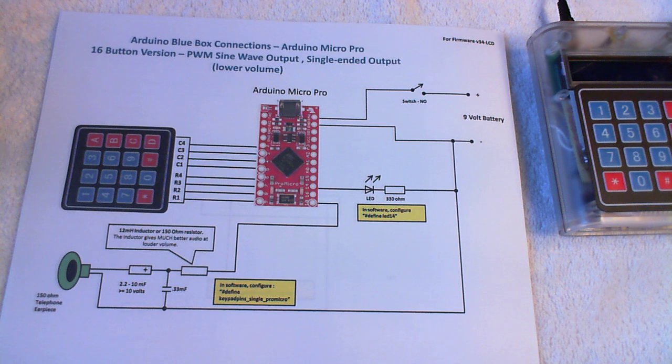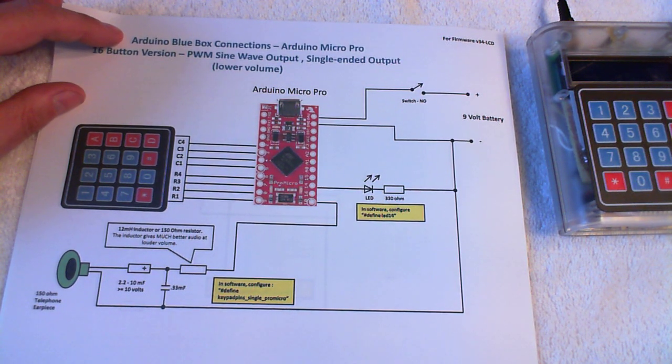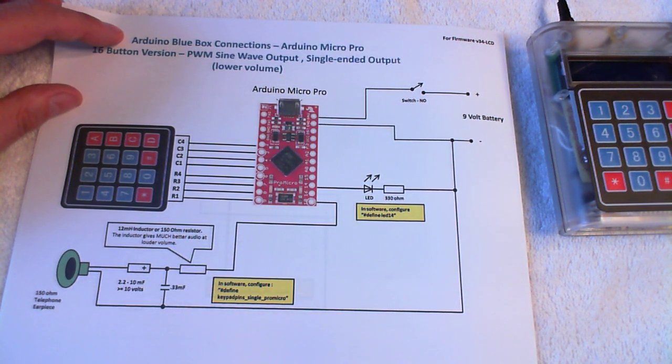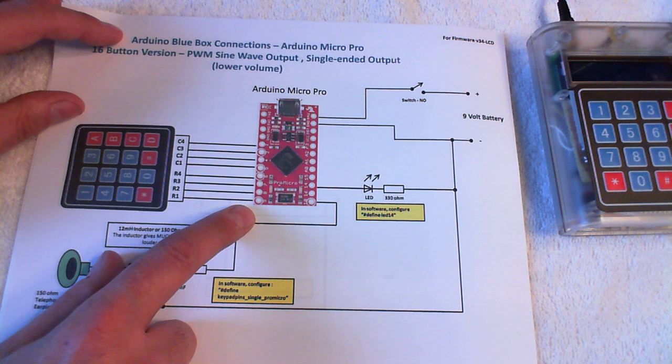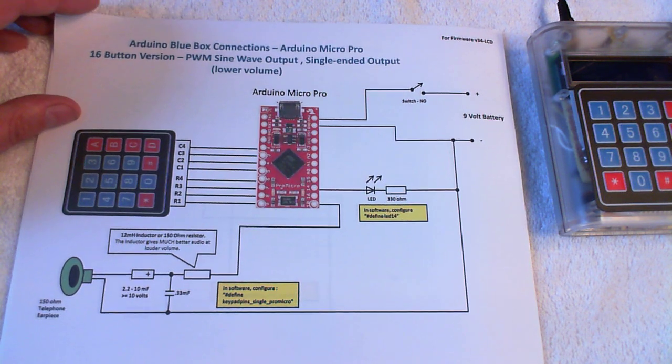Next two schematics or hookups are for the Pro Micro. This is for the single-ended version. Very simple setup. This allows the straight-through keypad at the cost of using a single-ended output, which gives you somewhat reduced volume, but it does make the wiring up a little easier and may eliminate the need for that carrier board I showed in the hardware video.